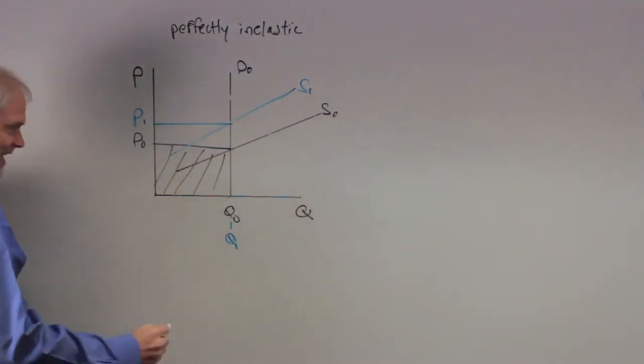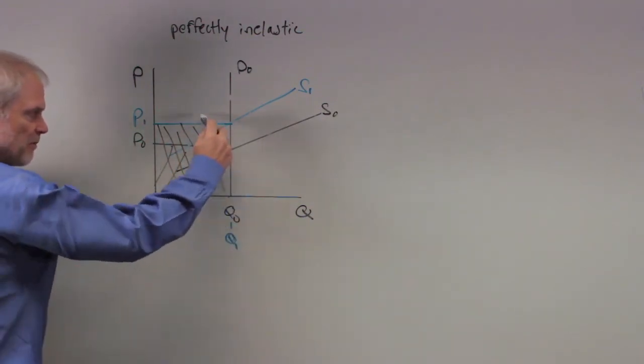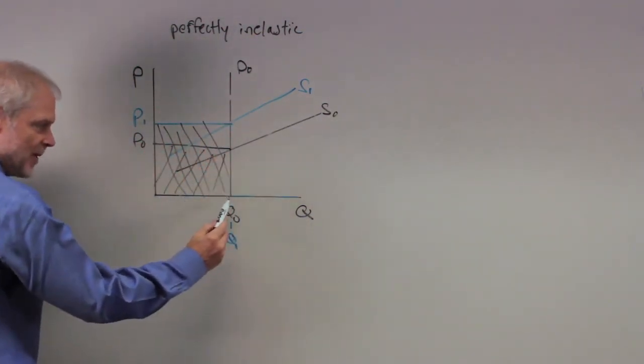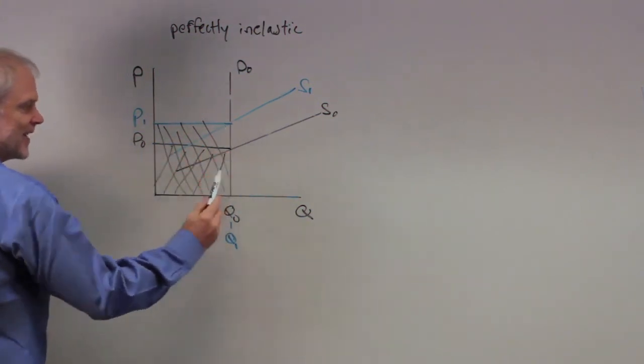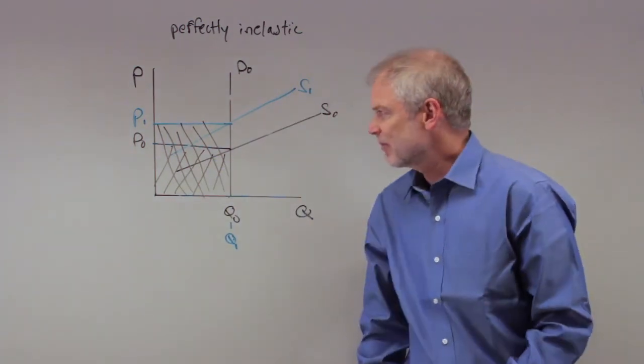We've got the shift back in supply, price rises and now the expenditures is this larger rectangle because this is the price paid by consumers and quantity demand hasn't changed, so the expenditures by consumers rise. They're not unchanged so D is wrong, but that's a nice way to see it and look at the impact on total revenue here.